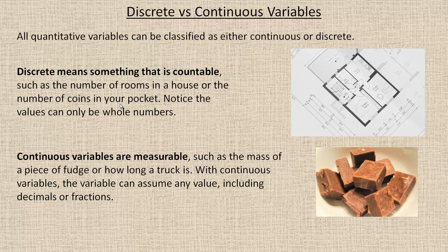The number of coins in your pockets. You could have eight coins in your pocket. You could have three coins in your pocket. But you would probably never tell anybody that you have 8.2 coins in your pocket because it's countable. It's a certain whole number. So discrete are things that are countable.